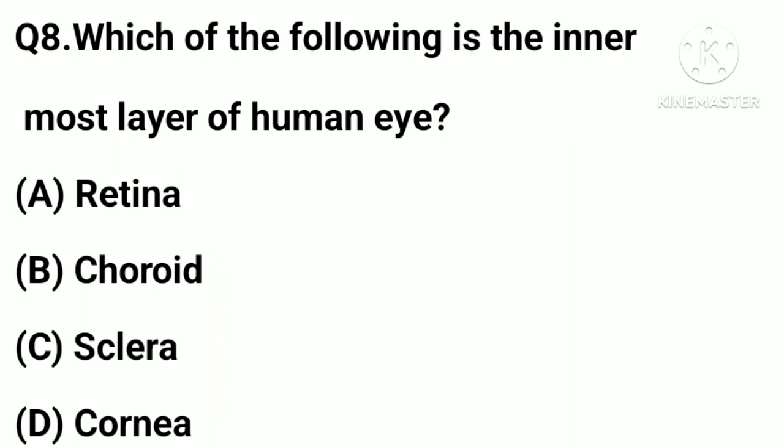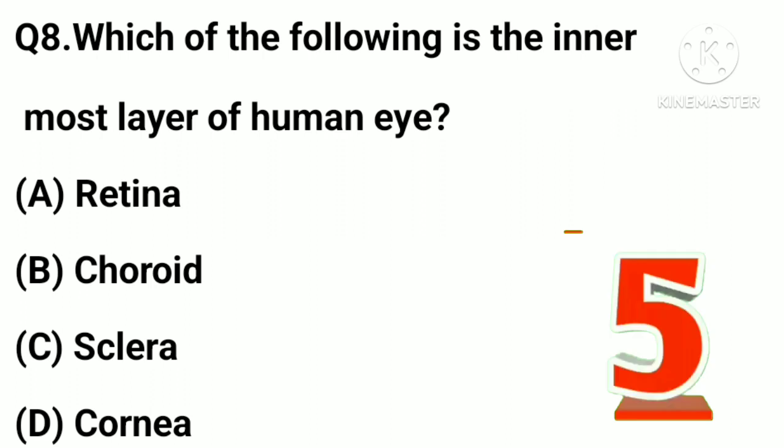Which of the following is the innermost layer of the human eye? A, retina; B, choroid; C, sclera; D, cornea.